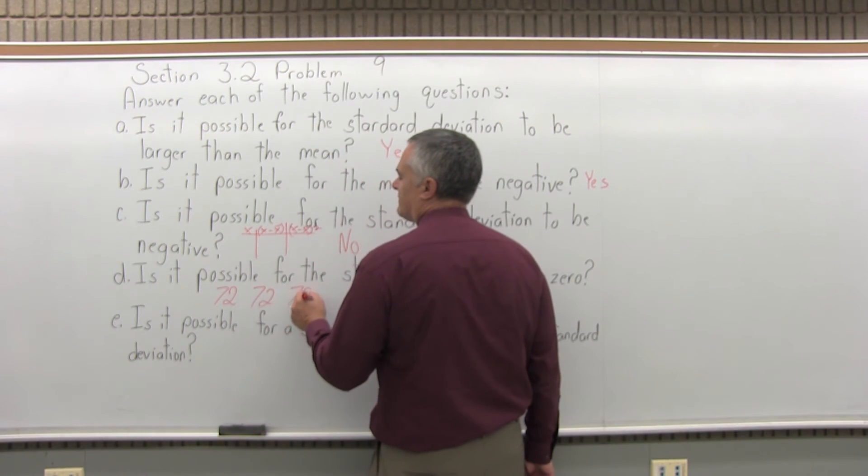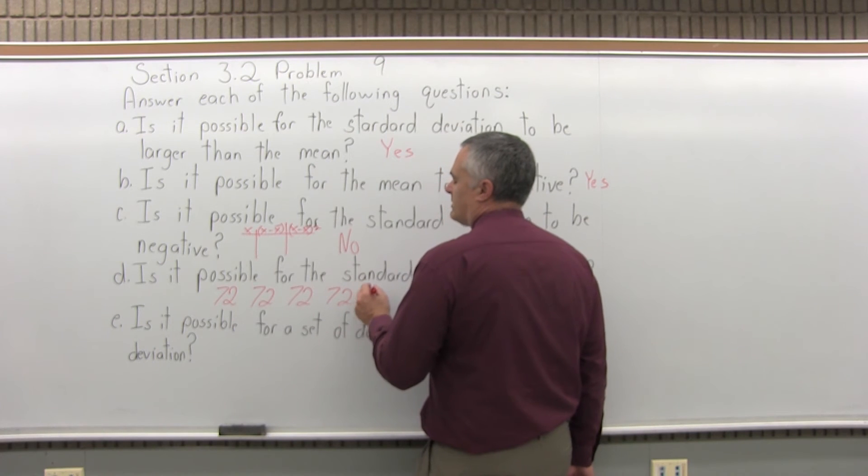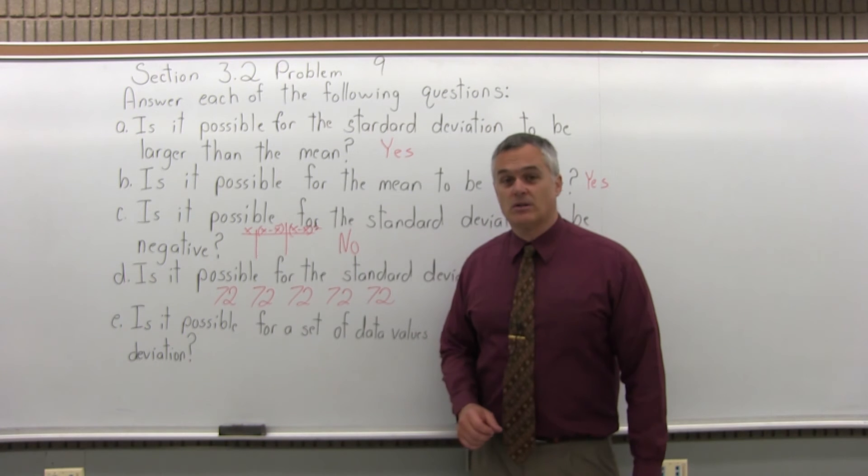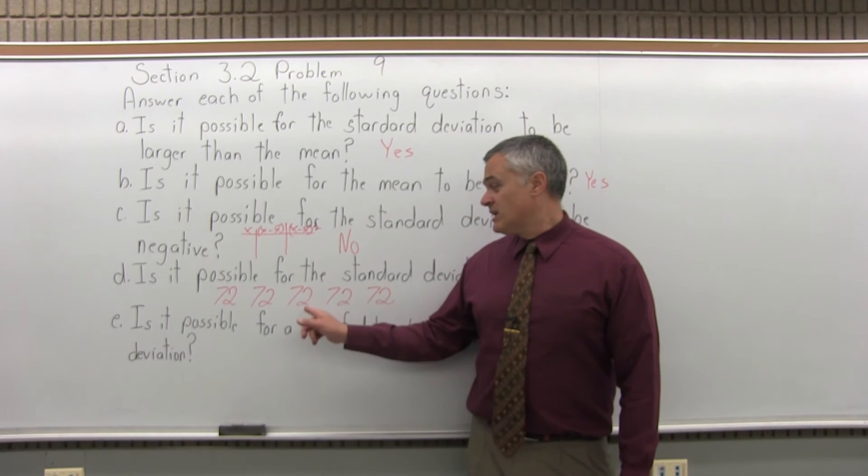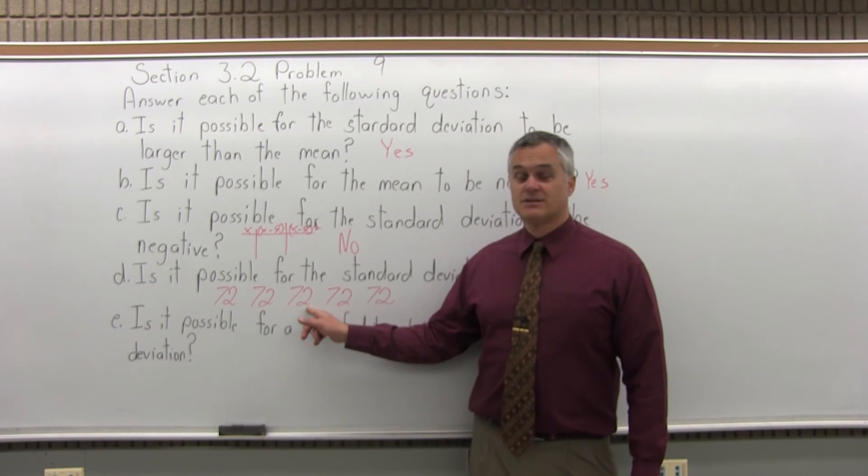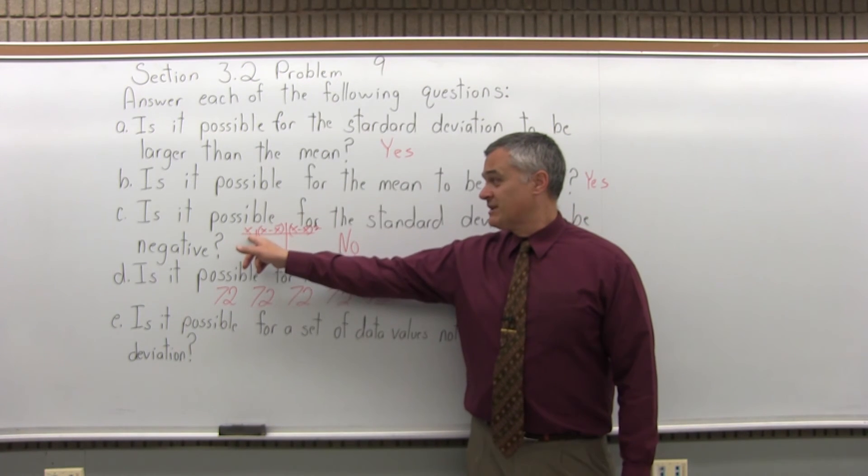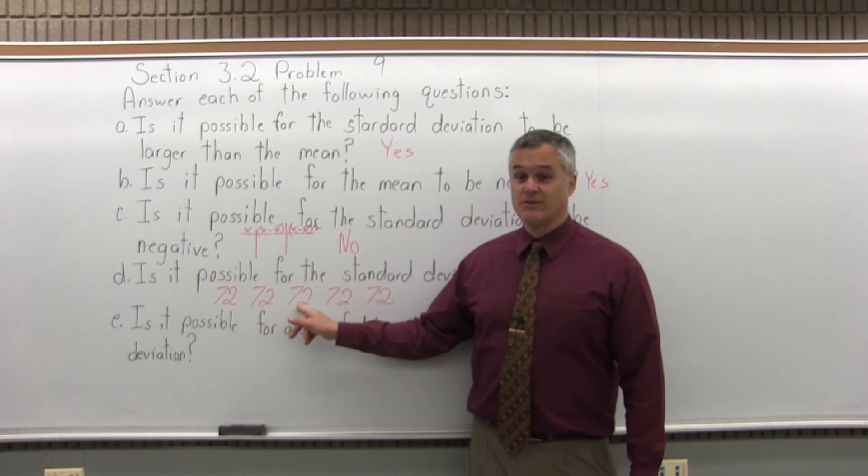Let's consider this small set of data value where we have the number 72 written five times. There's no spread in the data at all. So if you figured out the standard deviation for this, it would be zero. And if you fill out that chart, you'd have 72, 72, 72, 72. The average comes out to 72.